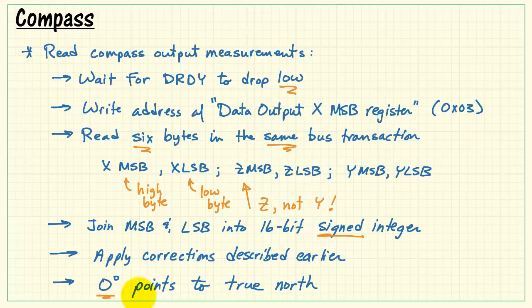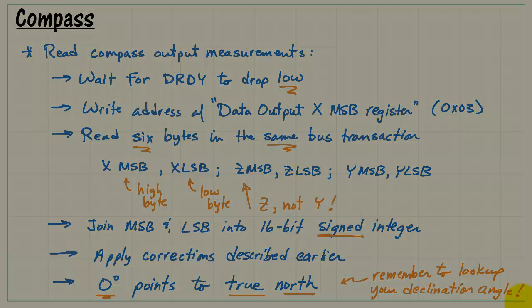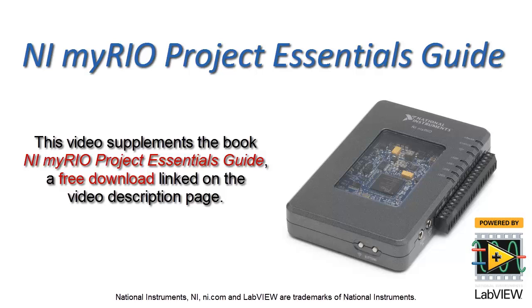When you do this, 0 degrees points to true north. Also remember to look up your declination angle. That changes depending on your location on the planet.